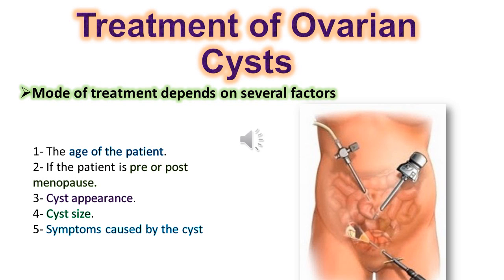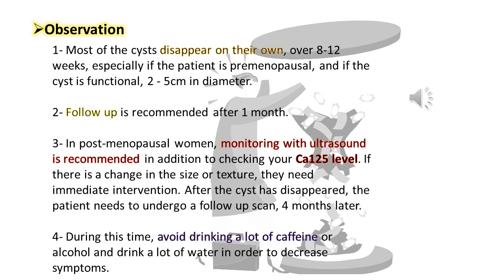Treatment of ovarian cysts depends on several factors: the age of the patient, whether pre- or post-menopausal, cyst appearance, cyst size, and symptoms. For observation: most cysts disappear on their own over 8 to 12 weeks, especially if the patient is pre-menopausal, the cyst is functional, and 2 to 5 centimeters in diameter. Follow-up is recommended after one month. In post-menopausal women, monitoring with ultrasound and CA-125 levels is recommended. If there is a change in size or texture, immediate intervention is needed. After the cyst disappears, a follow-up scan four months later is advised.